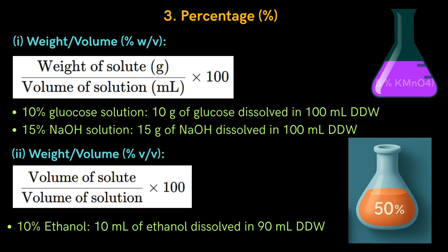Sometimes percentage is also used for preparation of solutions. Weight by volume (W/V) percentage = weight of solute in grams ÷ volume of solution in mL × 100%. This applies when a solid is dissolved in a liquid. For example, 10% glucose solution is prepared by dissolving 10 g of glucose in 100 mL of double distilled water; 15% NaOH is prepared by dissolving 15 g in 100 mL of double distilled water. For liquid-in-liquid solutions (V/V), the formula is: volume of solute ÷ volume of solution × 100%. For example, 10% ethanol is prepared by dissolving 10 mL of ethanol in 90 mL of double distilled water.